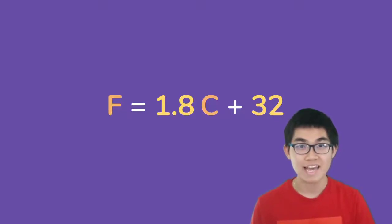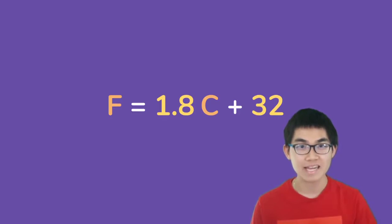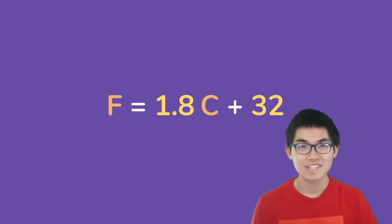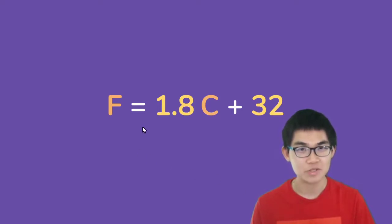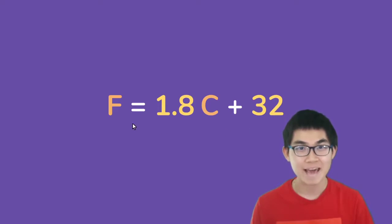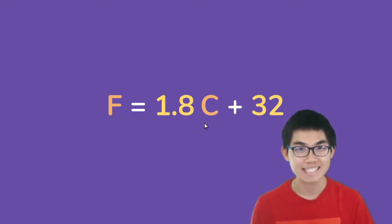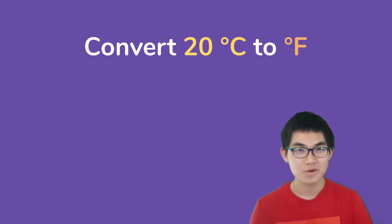Hey, what is up everybody! Today I'm going to show you how to convert from Celsius into Fahrenheit and also from Fahrenheit into Celsius. The formula that we can use is F is equal to 1.8 times C plus 32, where F is Fahrenheit and C is Celsius.